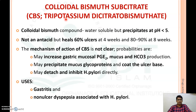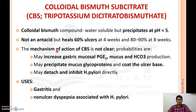Another ulcer protective agent is colloidal bismuth subcitrate, also known as tri-potassium dicitrobismuthate. It is a colloidal bismuth compound that is water-soluble but precipitates below pH 5. It is not an antacid, but it heals 60% of ulcers in 4 weeks and 80–90% of ulcers in 8 weeks.